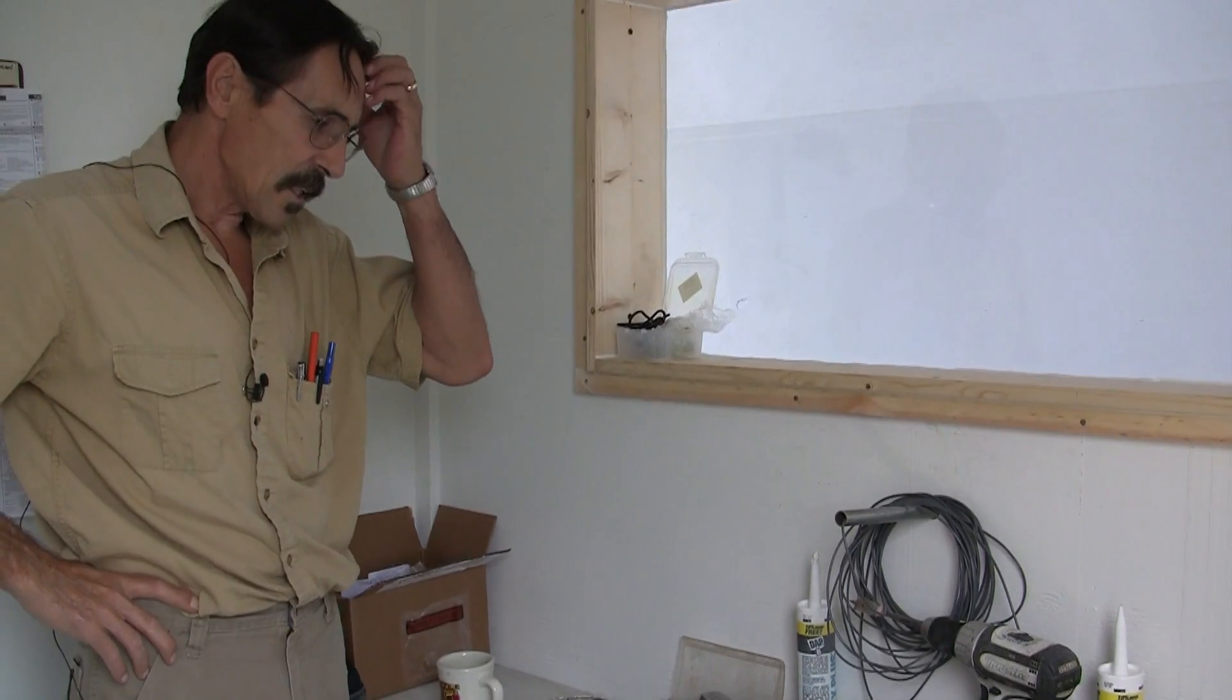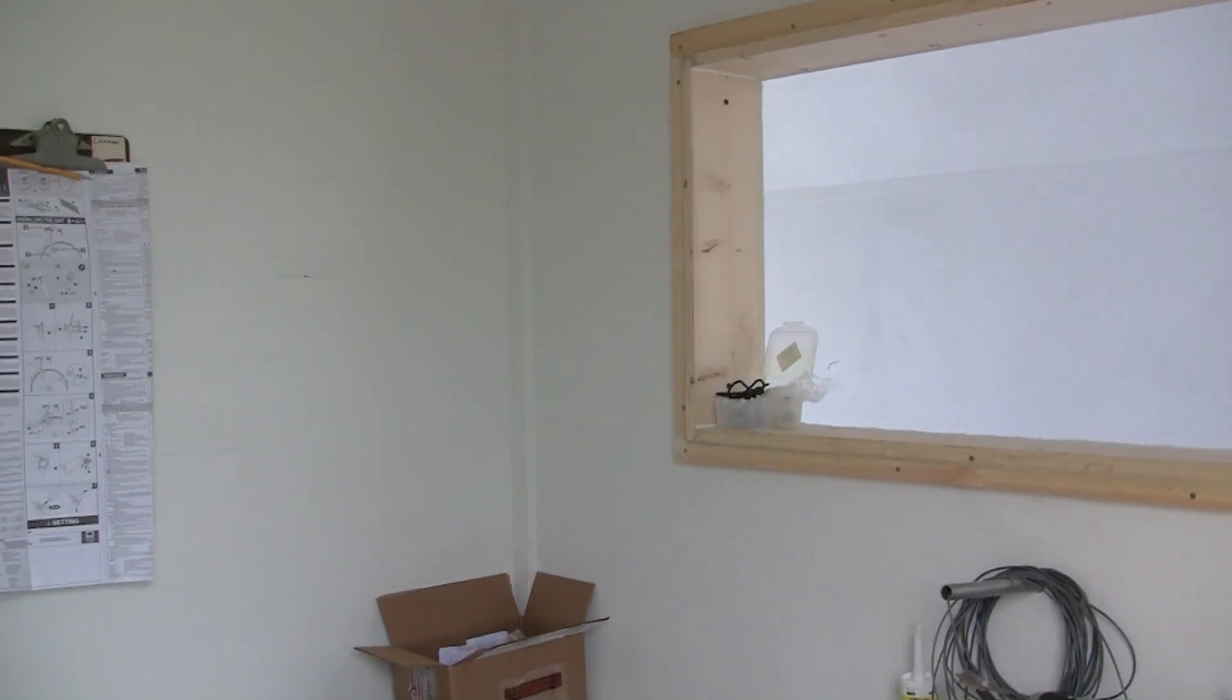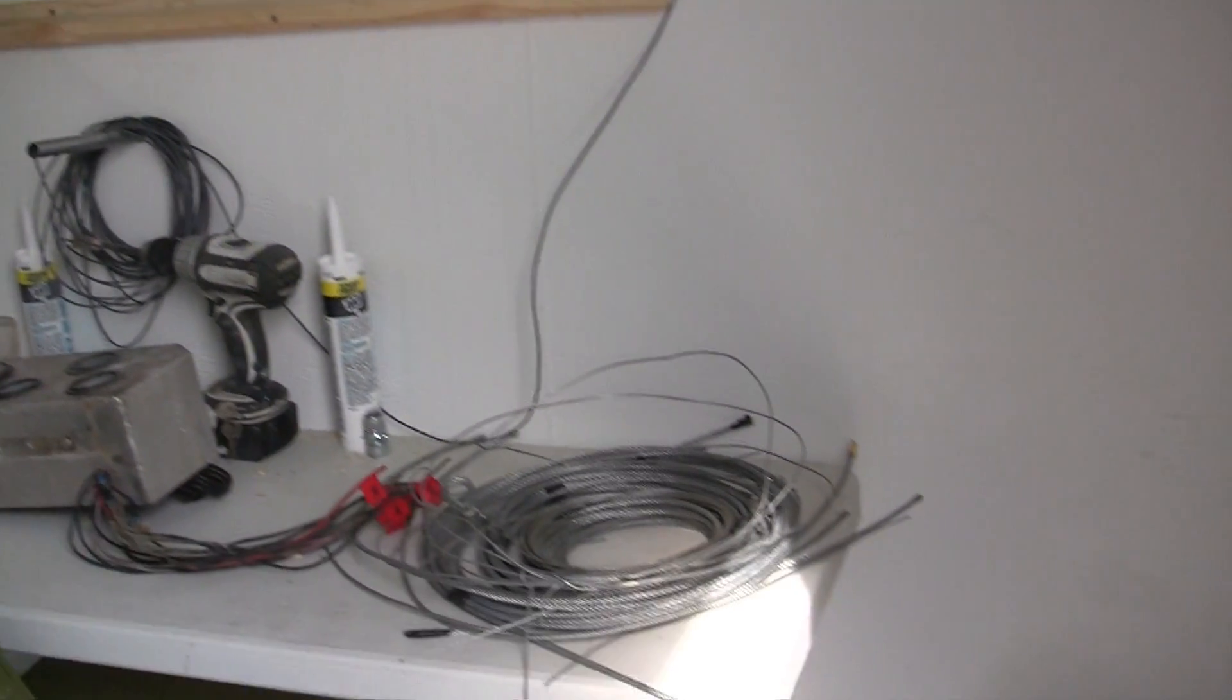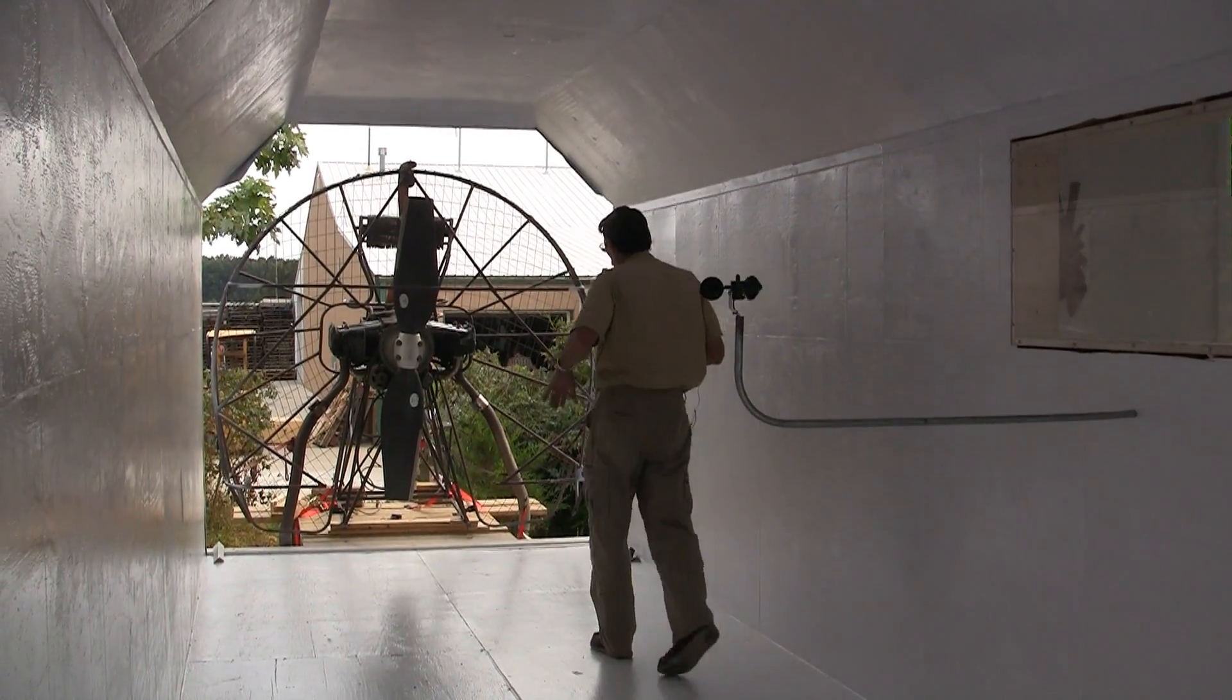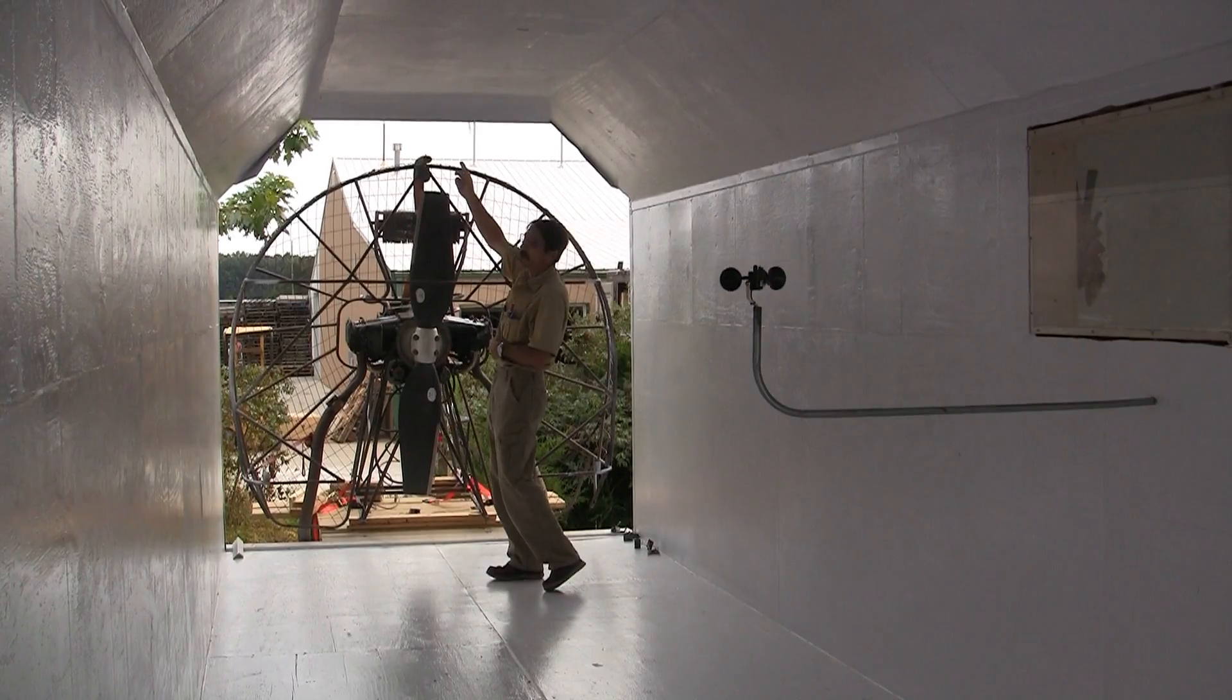Now we're going to go in the tunnel itself and look in here and see what we've got done so far. It's an 8x8 control room. Let's go on out in the other part. So on the tunnel here, we're going to put a closed circuit camera up here.